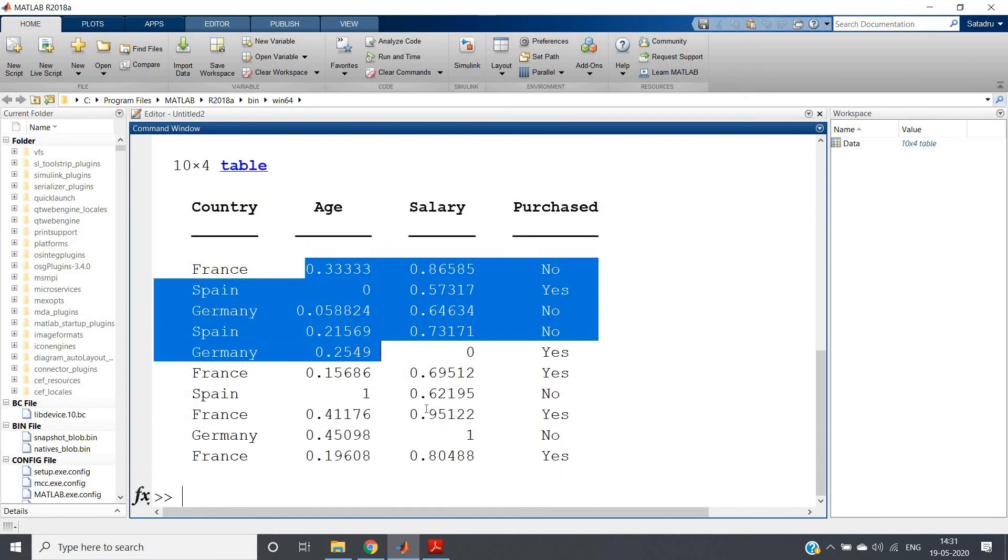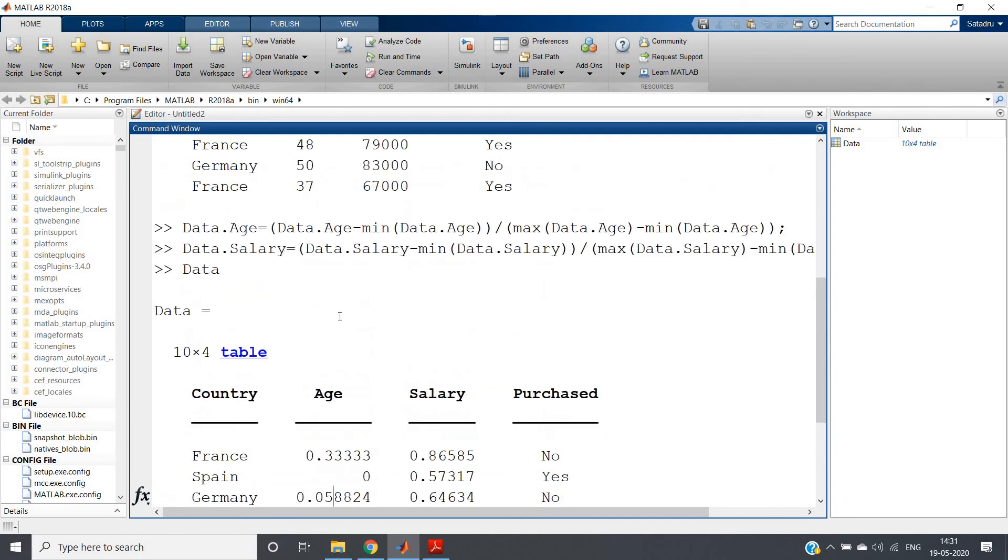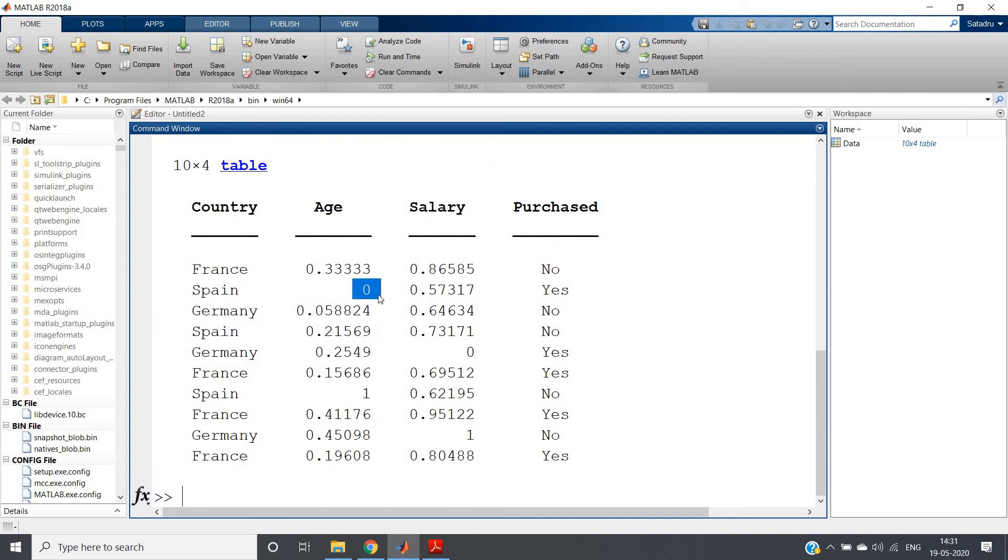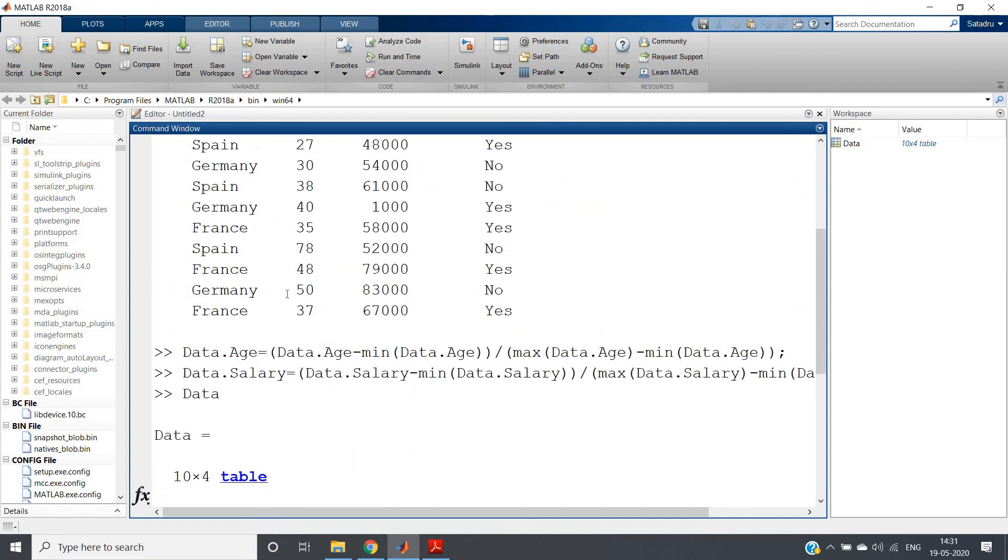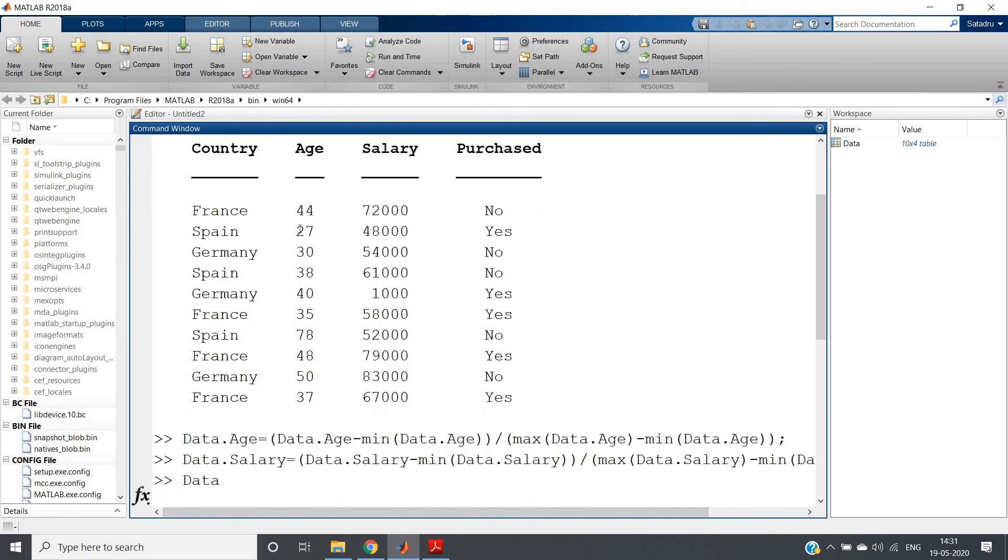Now if we write 'data' and hit enter, see all our data are basically scaled in between zero and one. Now the particular salary will not be dominating with respect to age in a very high amount. Basically here you can see zero we are getting for Spain, why?